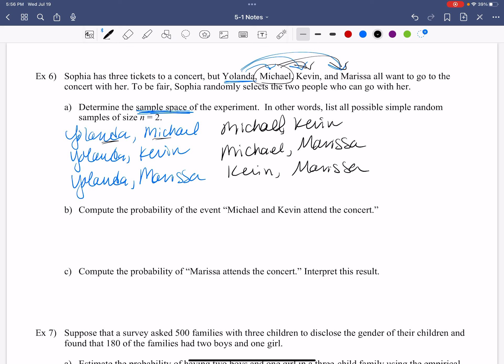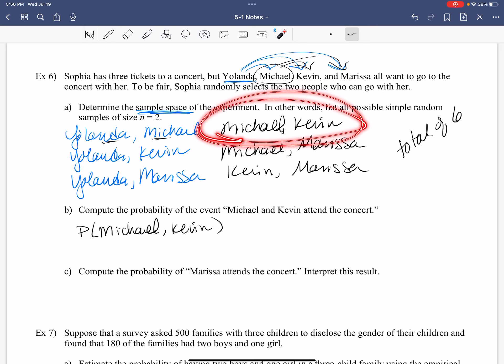And then those are my choices. So how many options are available here? Six, right? Total of six options. So compute the probability the event of Michael and Kevin attend. The probability of Michael and Kevin. How many times does Michael and Kevin occur? Just once out of how many total? Six. Good. So this is one out of six that Michael and Kevin can attend.